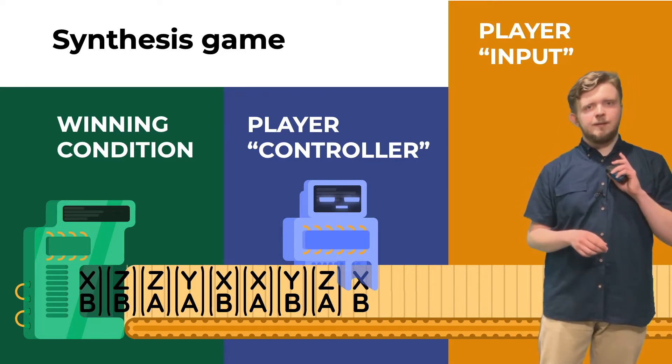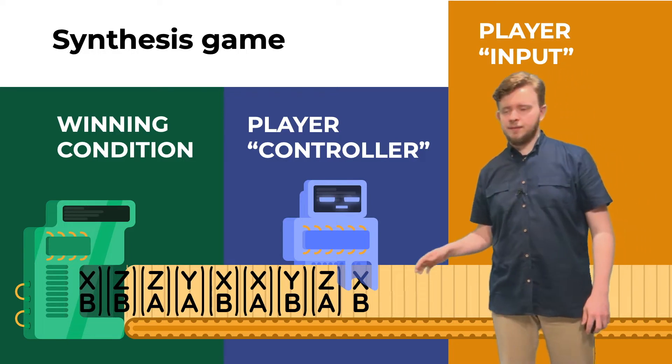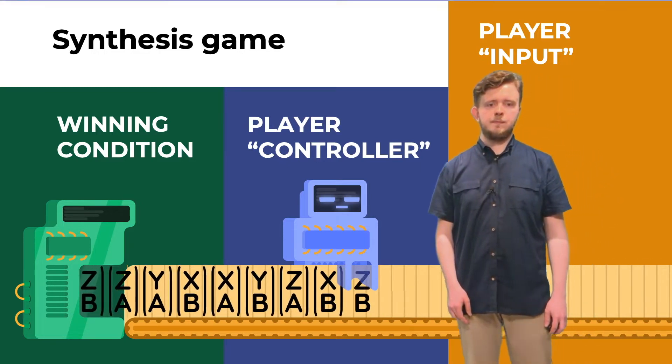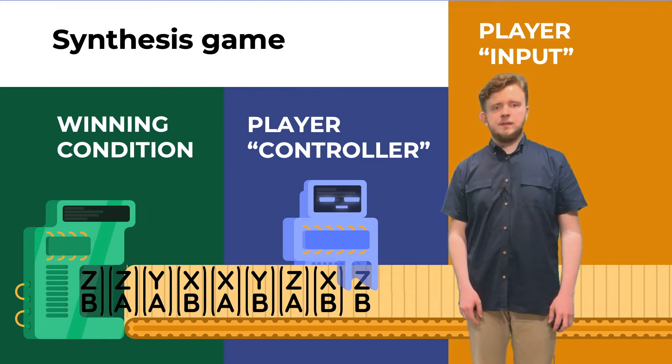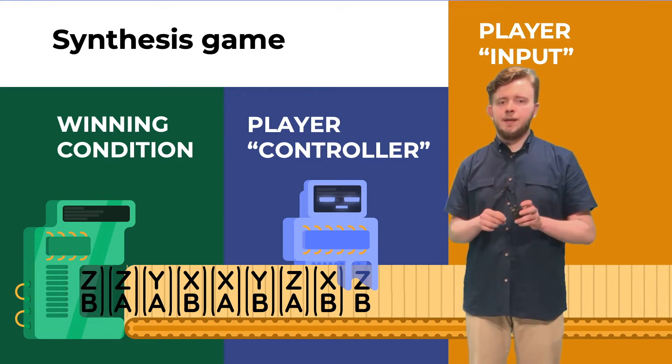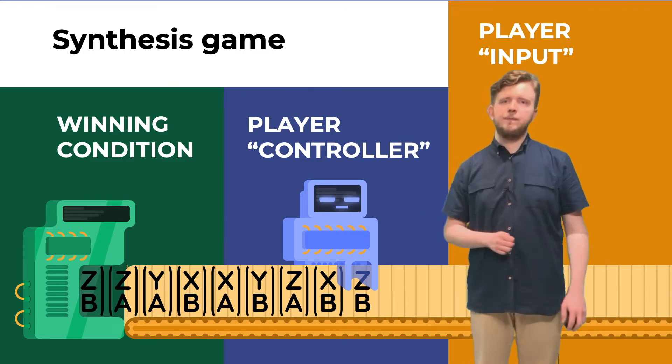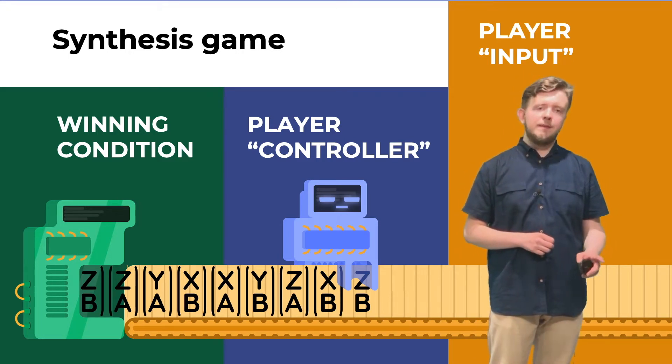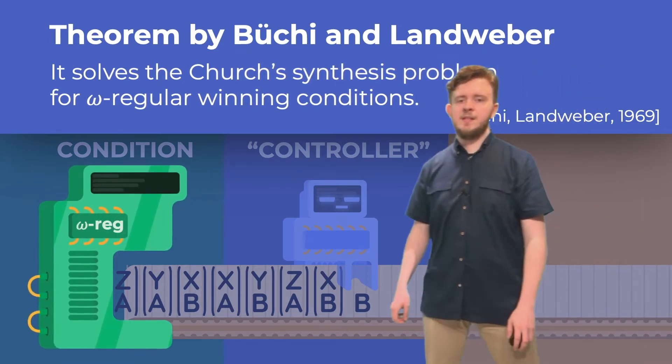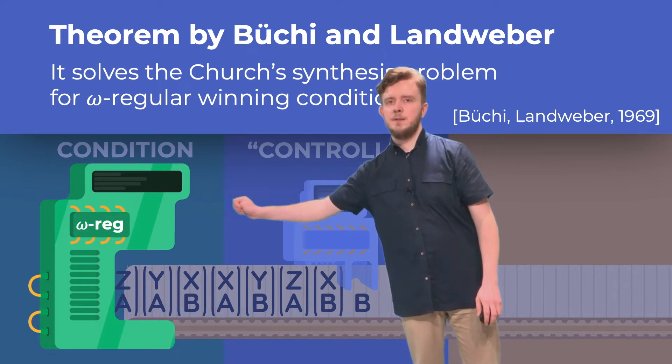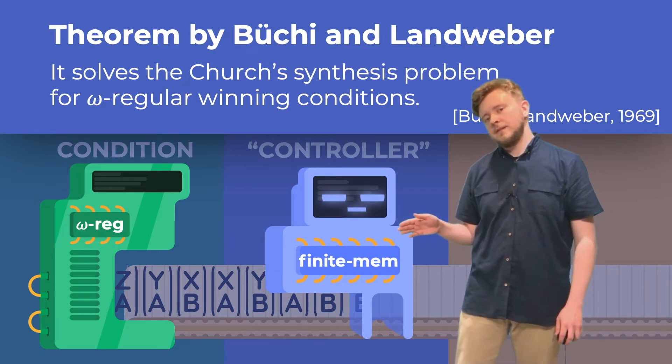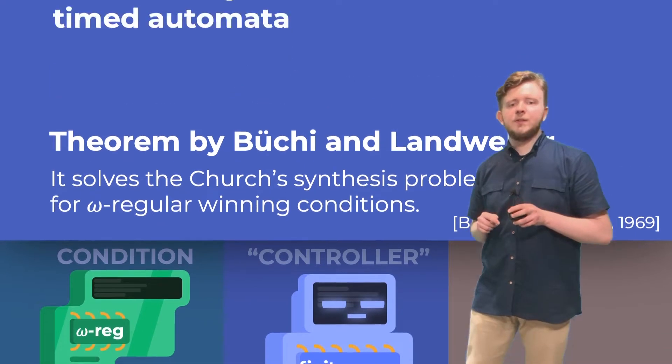Now what we get is a winning condition here and two players, controller and the input player. For the sake of this presentation I will have to take the role of the input player. A single turn of this game looks as follows. First I, as the input player, can produce a next letter of the input. Then the controller needs to produce its answer to my input. Observe that the question of the existence of a finite memory strategy for the controller is now exactly the same problem as the Church's synthesis as defined before. Now there is an important theorem by Büchi and Landweber.